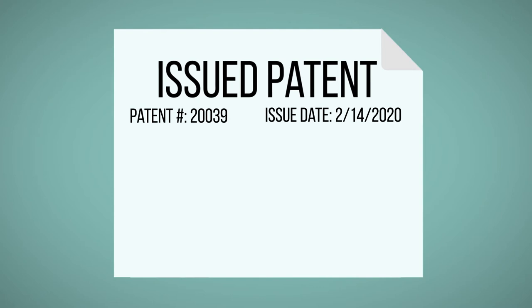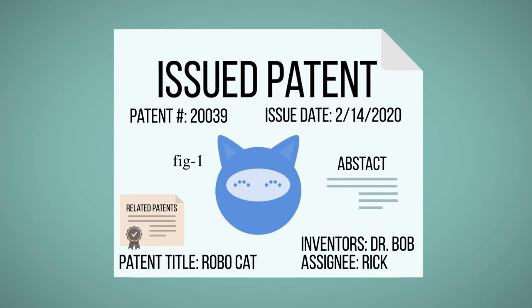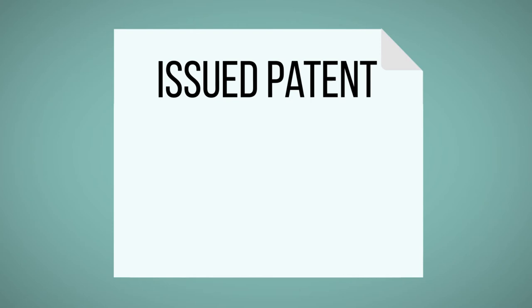An issued patent includes a front page that lists the patent number, issue date, patent title, inventors, assignee, related patents and applications, an abstract of the patent, and typically a figure exemplifying one of the patented inventions.